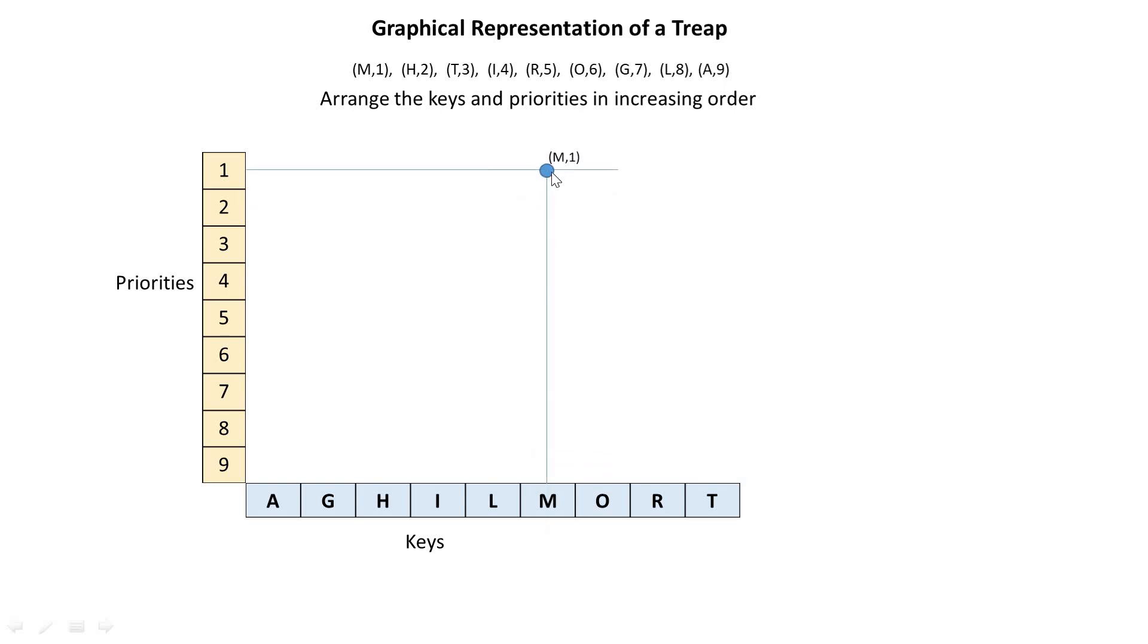The next thing is H2. So we take 2 against what? Against H. And this is what we have. And we do for I4, for R5, for O6, for G7, for L8, and then for A9. And there we are. We've created a complete treap graph. This is about the treap data structure.